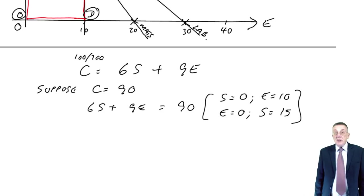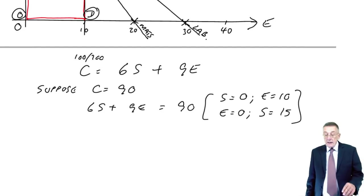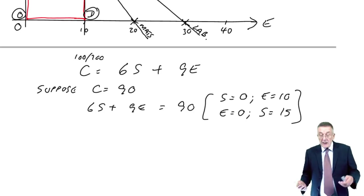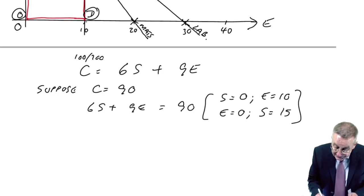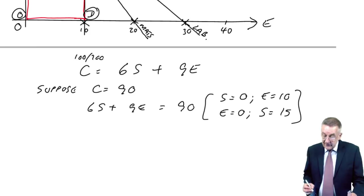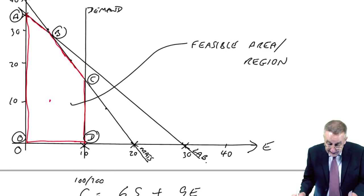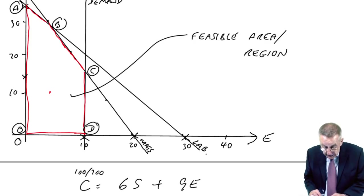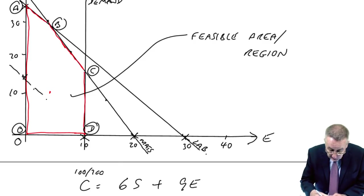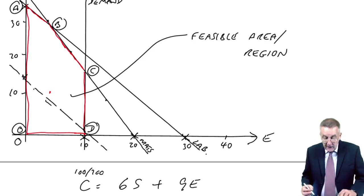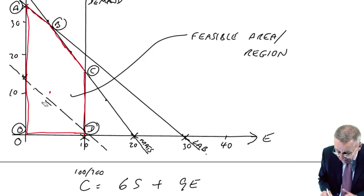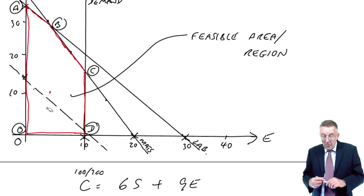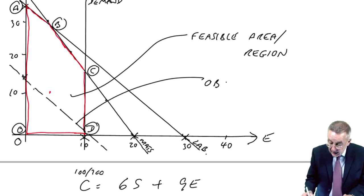Let me put that on the graph, and then I'll be in a position to explain why I'm doing this. s=0 and e=10 is there. e=0 and s=15 is about there. Join them up. And I'm deliberately doing a dashed line to make it clear this isn't a constraint. This is my objective line.